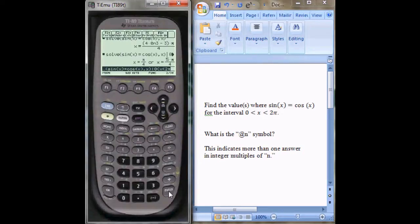And now you can see the two values are pi over 4 and 5 pi over 4 for the interval 0 to 2 pi. And it's completely evident if you just look at a graph.